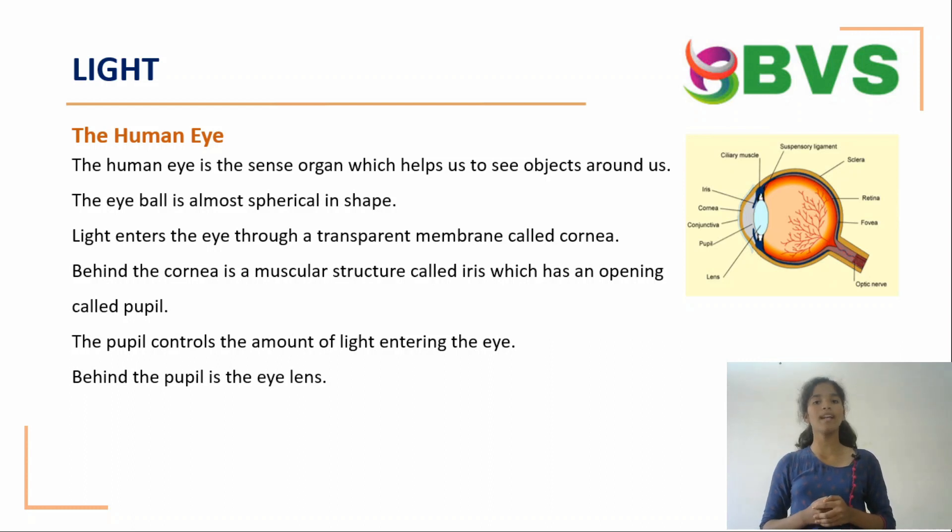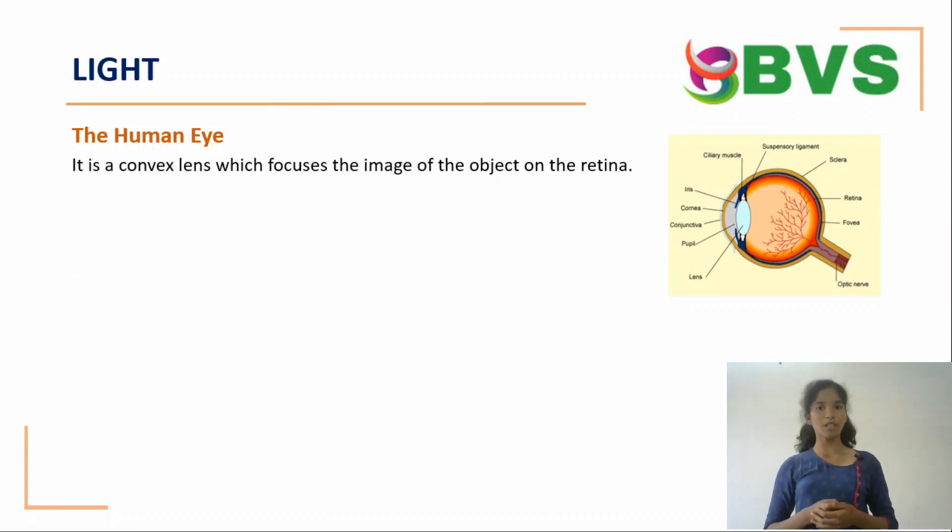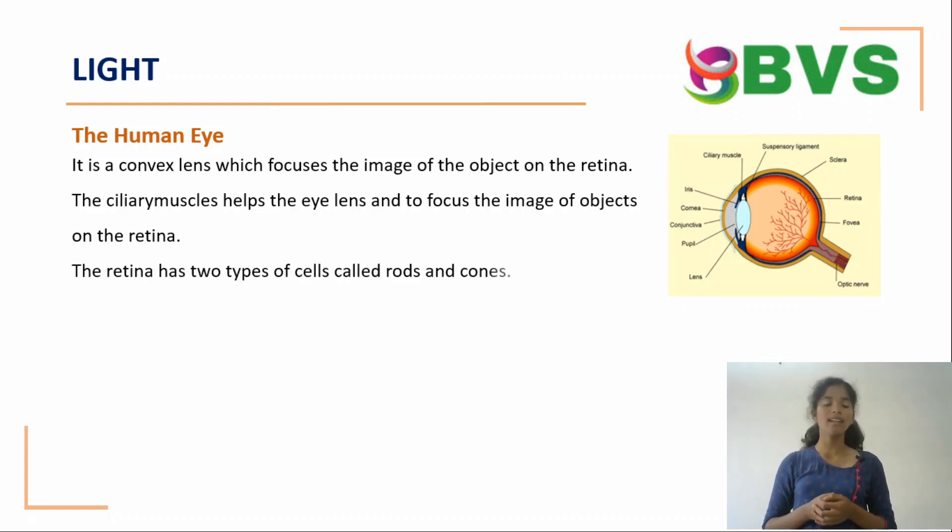Behind the pupil is the eye lens. It has a convex lens which focuses the image of the object on the retina. The ciliary muscle helps the eye lens to focus the image of the object on the retina.